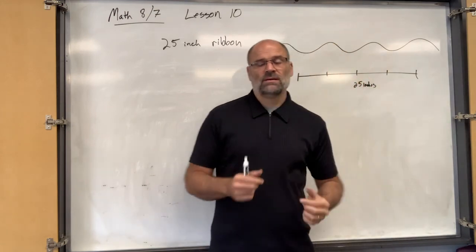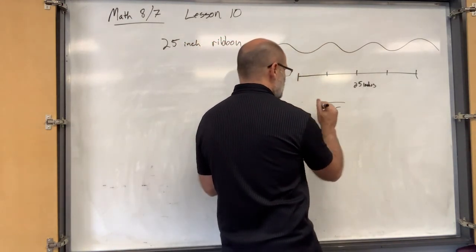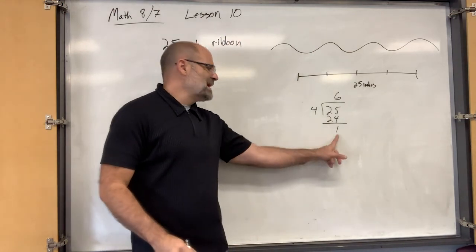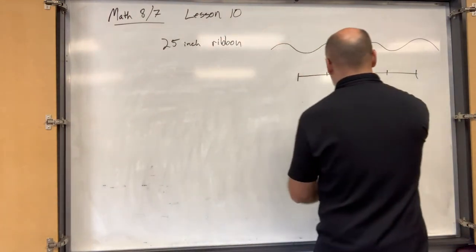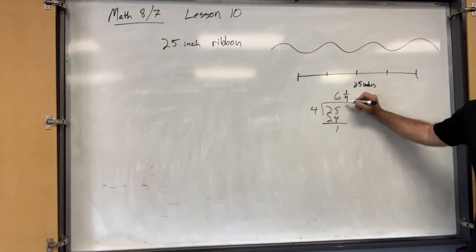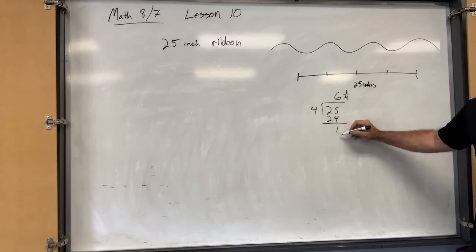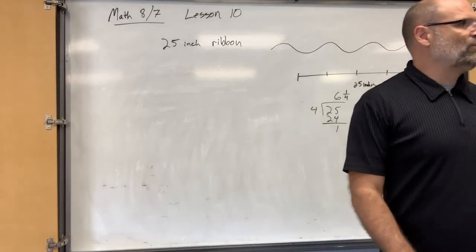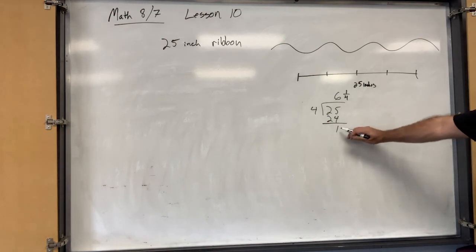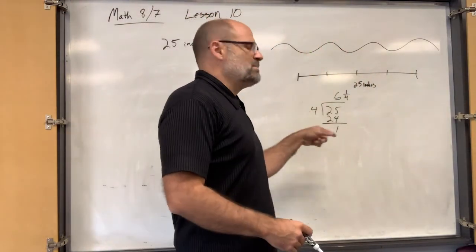25 divided by four goes in six full times, and then you have one inch left over. What do you do with that? You divide one by four — just write it as one over four. Instead of saying 'remainder one,' you just write that remainder over four, or whatever you're dividing by. So instead of writing 'remainder one,' just write your remainder over the divisor, and you're done.